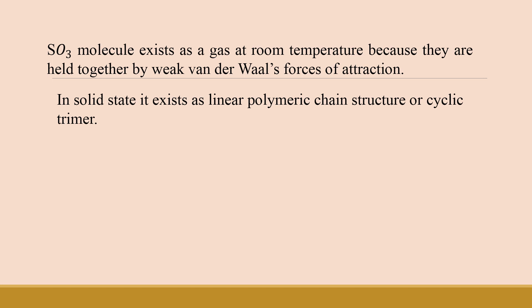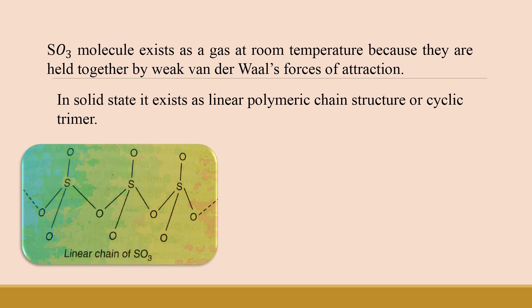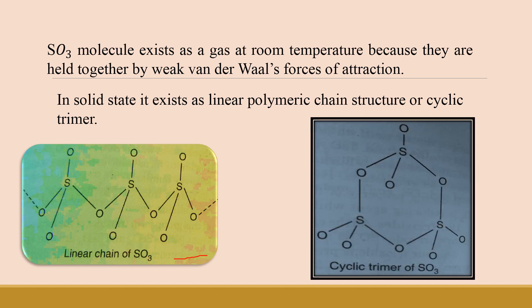In the solid state, SO3 exists as a linear polymeric chain structure or as a cyclic trimer. The linear polymeric chain is formed by a combination of different SO3 molecules, or it can be present as a cyclic trimer in which three SO3 molecules join together to form a cyclic ring structure.